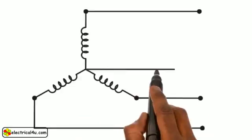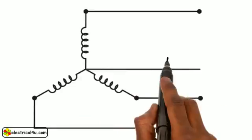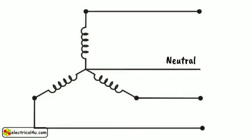Often, a fourth conductor is taken out from the star point. This fourth wire is called the neutral. The remaining three ends are used to connect with load. These ends are generally referred to as Red, Yellow, and Blue.